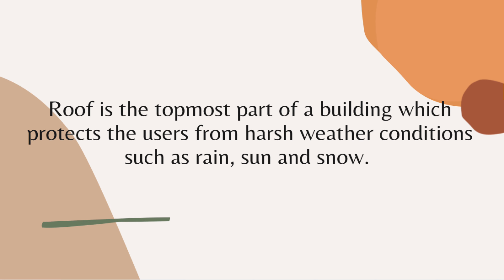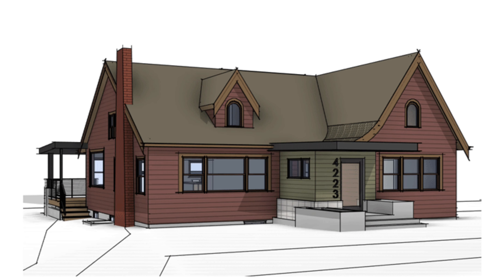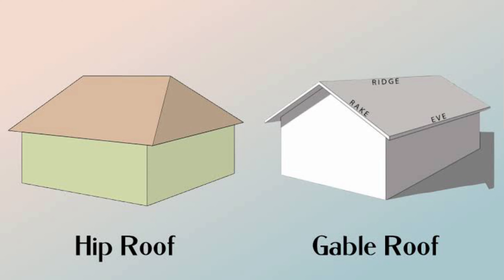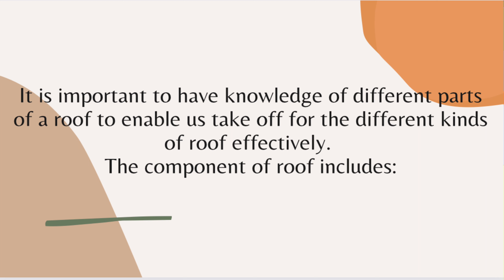A roof is the topmost part of a building which protects the users from harsh weather conditions such as rain, sun, and snow. Roofs consist of different parts and are of different kinds — they could be hip roof, gable roof, flat roof, lean-to roof, etc. It is important to have knowledge of different parts of a roof to enable us to take off for the different kinds of roof effectively.